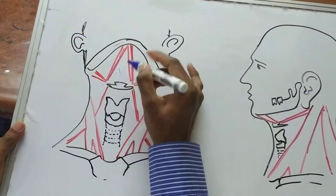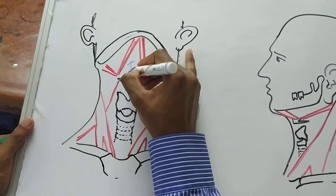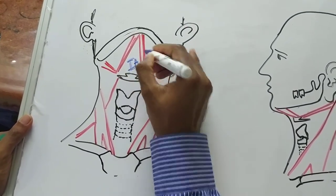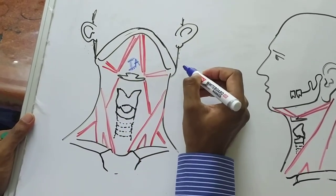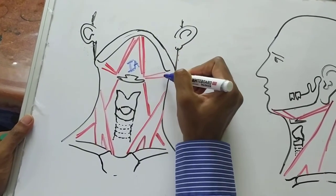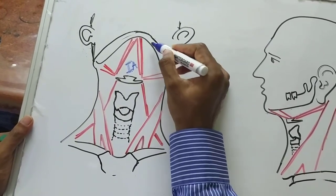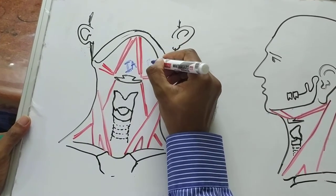Level 1A is between the two bellies of the digastric. Level 1B will be between the anterior and the posterior belly of digastric and superiorly bounded by the lower border of the mandible. So this will be level 1B.